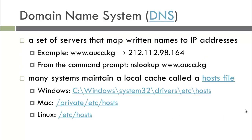Each device or computer is given a unique IP address. Instead of having to memorize long numbers to go to a web page, the Domain Name System, or DNS, was created. It acts as a map. So when we type in the web browser something like www.aucakg, it goes to the DNS server, looks up that information, and returns the address you need to go to.